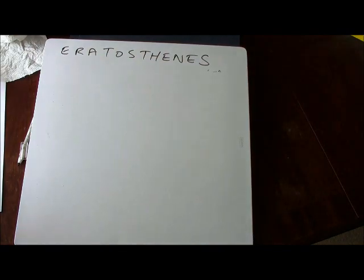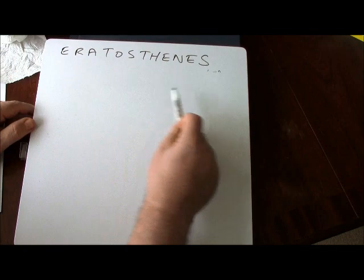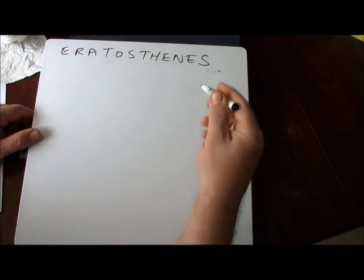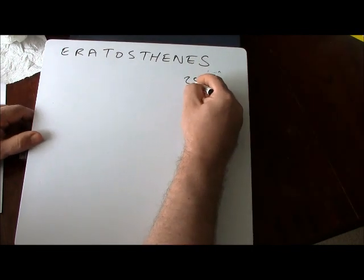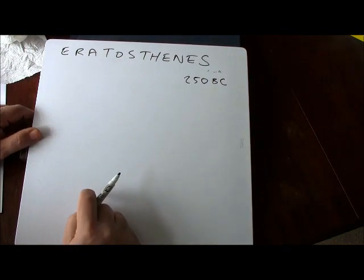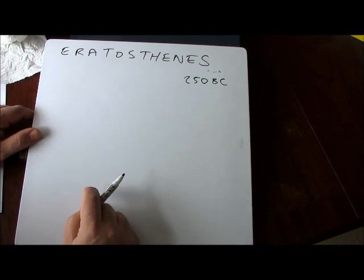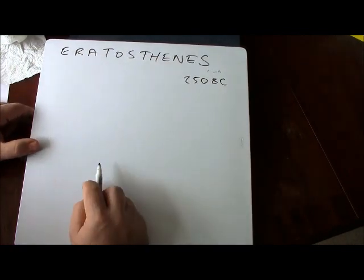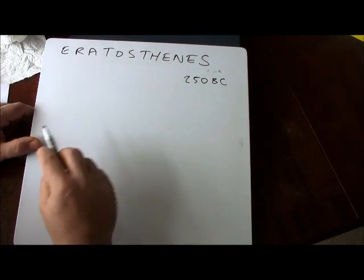In this video I'm going to talk about how Eratosthenes measured the circumference of the earth. The remarkable thing was he did it in about 250 BC — more than 2,000 years ago — and he managed to come up with a value for the circumference of the earth. A couple of observations led him to the answer.